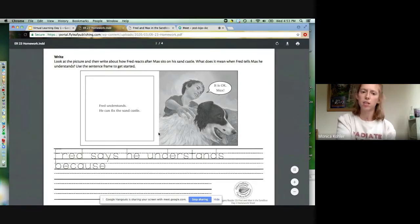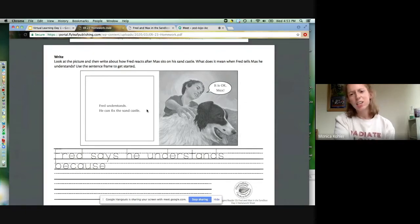We see Fred patting Max on the back and he says, it's okay Max. Fred understands, he can fix the sandcastle. How did Fred feel when that happened? Why does he say he understands? What did he mean when he said he understood? I want you guys to think about that for a second.